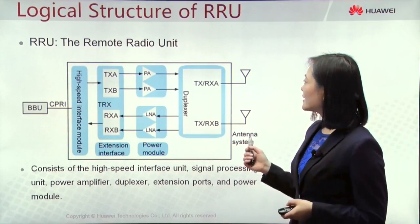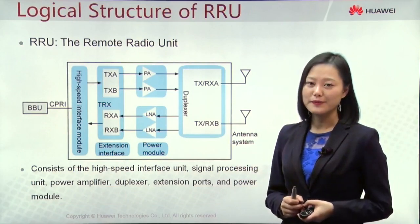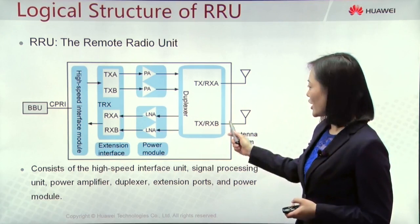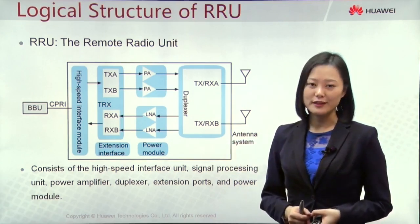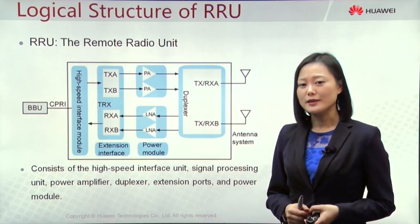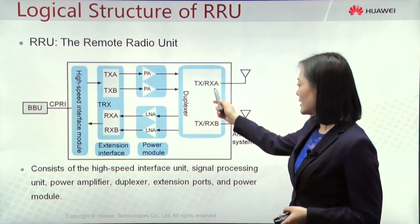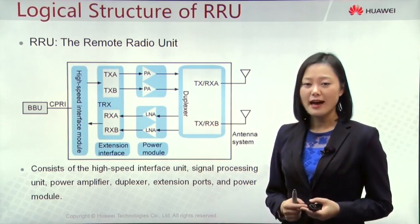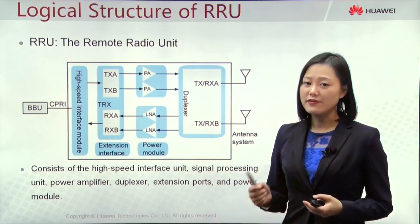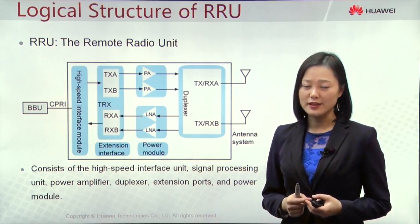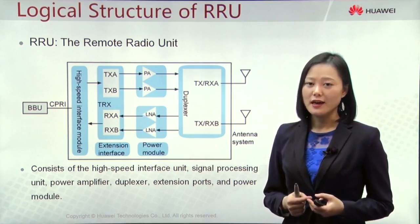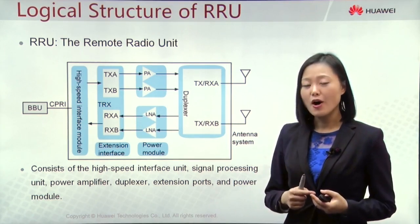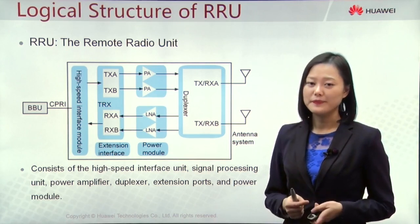Now let's check the logical structure of RRU. For RRU working on FDD mode, the logical structure is the same as our RFU unit. But if the RRU is working on TDD mode, the duplexer changes to a switch to decide whether each time slot is for receiving or sending data. TDD decides uplink or downlink data by time, not by bandwidth.